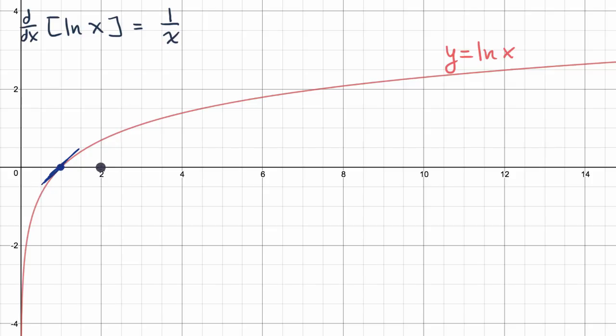What about when x is equal to 2? Well, this point right over here is the natural log of 2, but more interestingly, what's the slope here? Well, it looks like, if I try to draw a tangent line, the slope of the tangent line looks pretty close to 1/2. Well, once again, that is 1 over x. 1 over 2 is 1/2. Let's keep doing this.